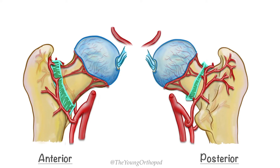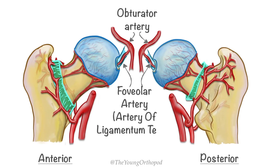The artery of the ligamentum teres is usually a branch of the obturator artery, and occasionally it may arise from the medial femoral circumflex artery. It supplies usually only a small portion of the head close to its site of entry and is insufficient if other vessels are divided.